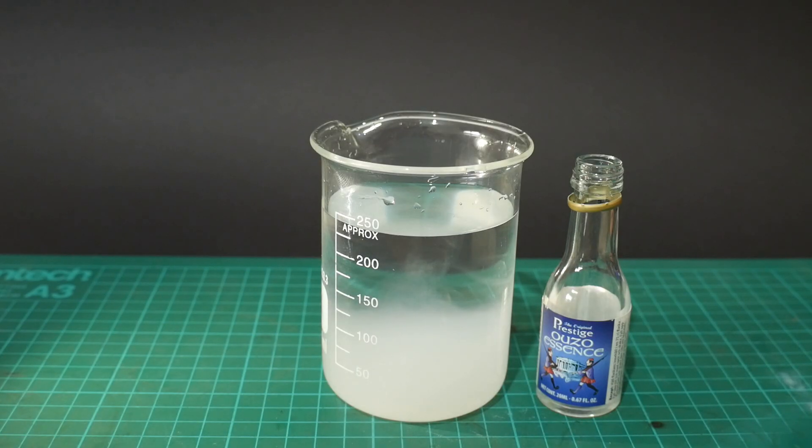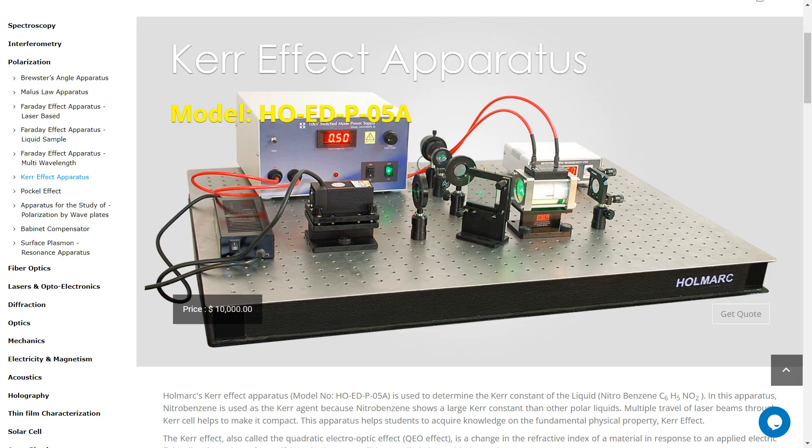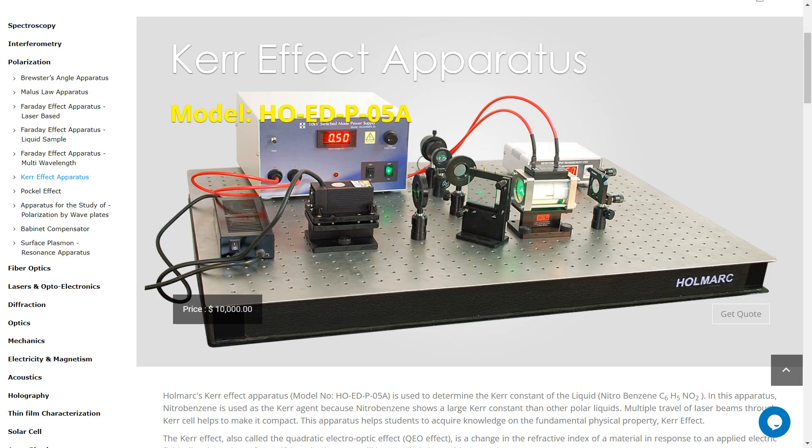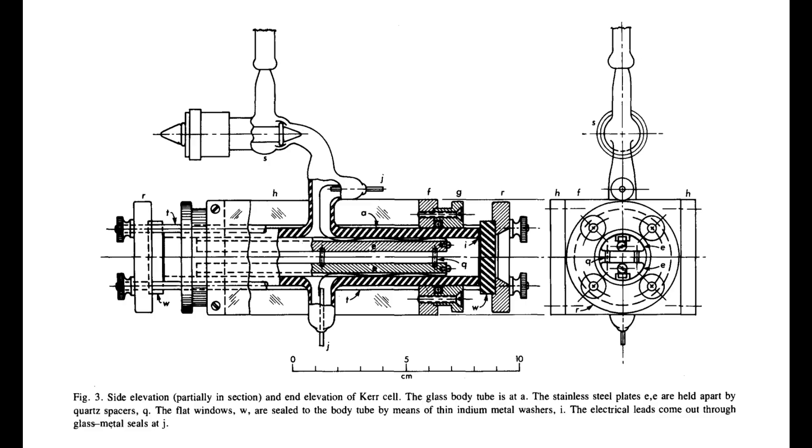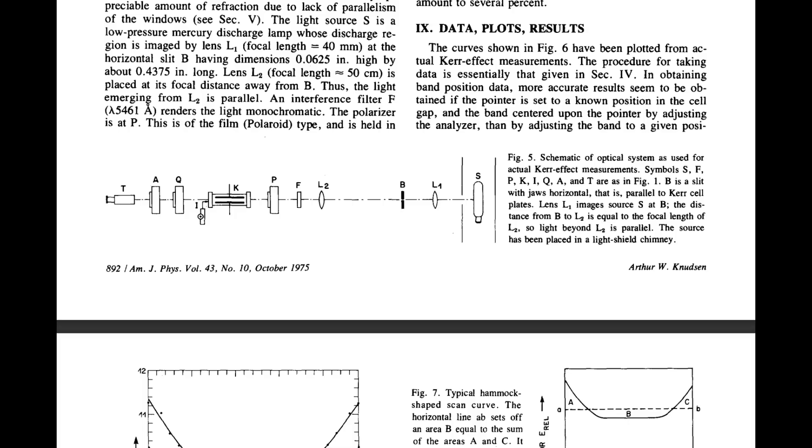Since this stuff is non-toxic, I ordered some to try out in a Kerr cell. Obviously, a Kerr cell is required to test the effect. It is possible to buy these, but they are really quite expensive for what they are. There are plenty of elaborate designs in academic papers, but fundamentally, they are nothing more than a suitable container for the liquid with optical windows into which isolated parallel electrodes are positioned. In order to view the polarisation change, we need a pair of polarisers and a suitable high voltage supply to drive the cell.